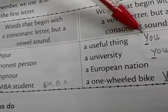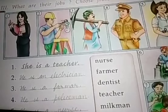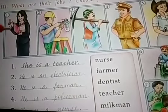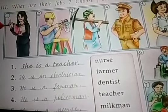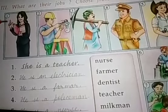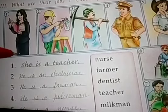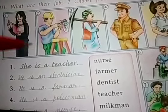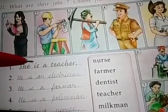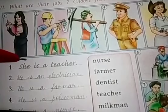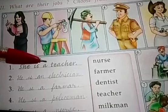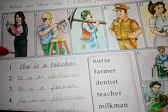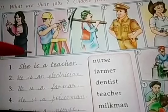Look at these pictures. There are many pictures here. The first lady — what profession does she have? She is a teacher. Why do we say A here? Because T is a consonant, so we say: she is a teacher.